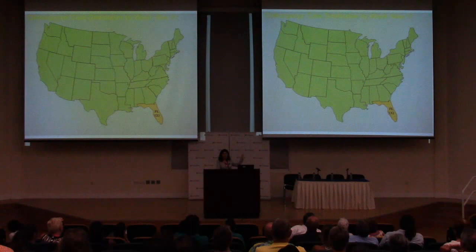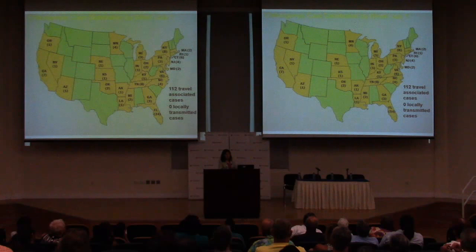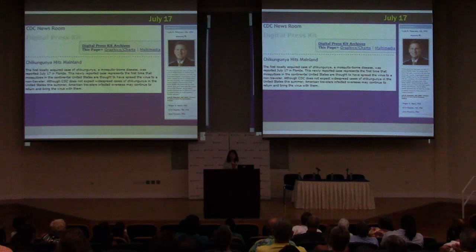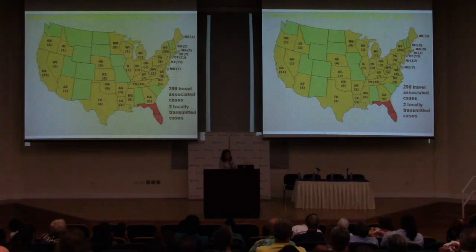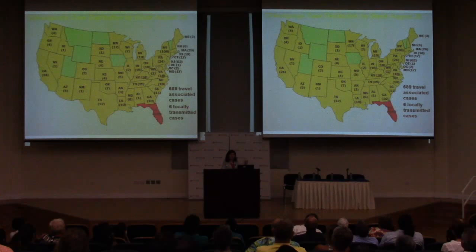As the weeks went by, more and more states reported imported cases. Then on July 17th, locally transmitted cases were confirmed in Florida — a big deal given the abundance of both Aedes albopictus and Aedes aegypti there. Florida is now marked in red for autochthonous cases. Most other states continue to see only imported cases, but there are ongoing studies in Texas, where local dengue transmission occurs in border towns, making local chikungunya transmission there also possible and likely.